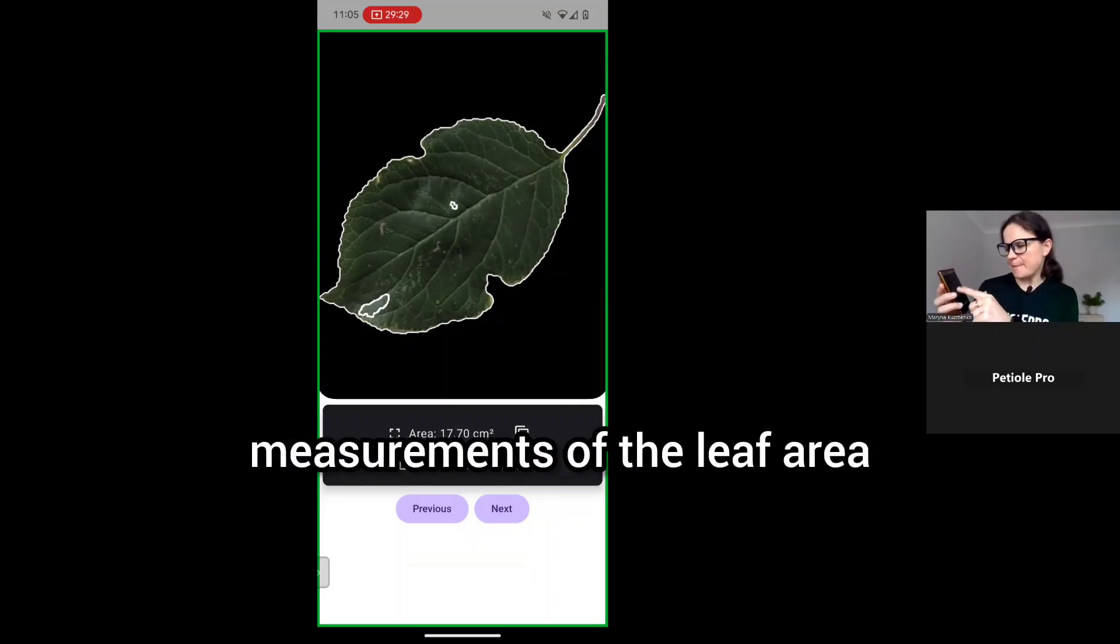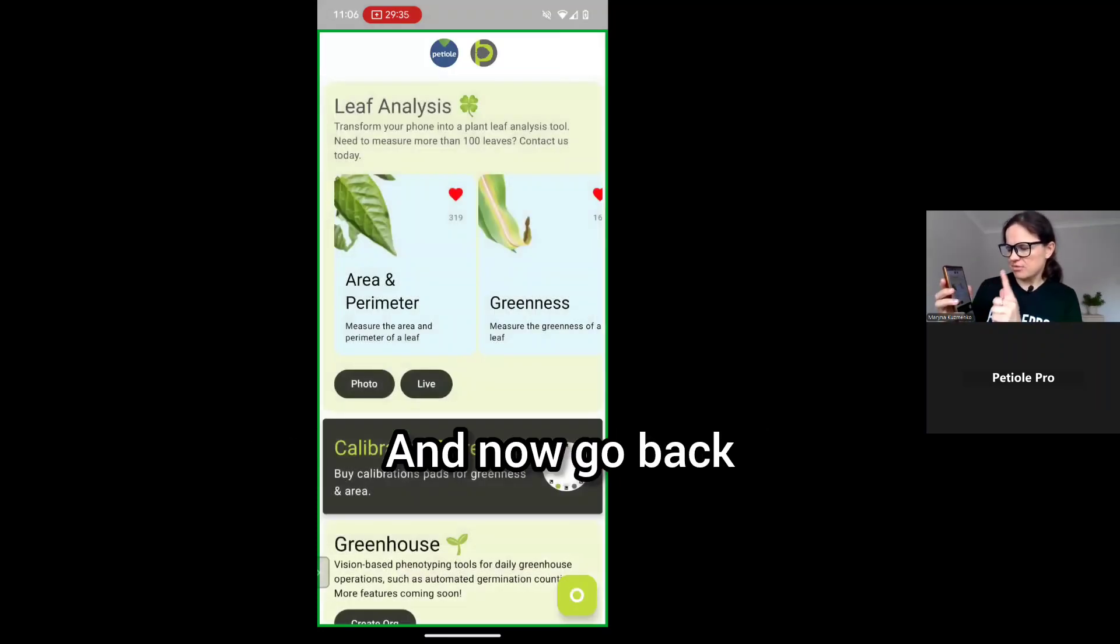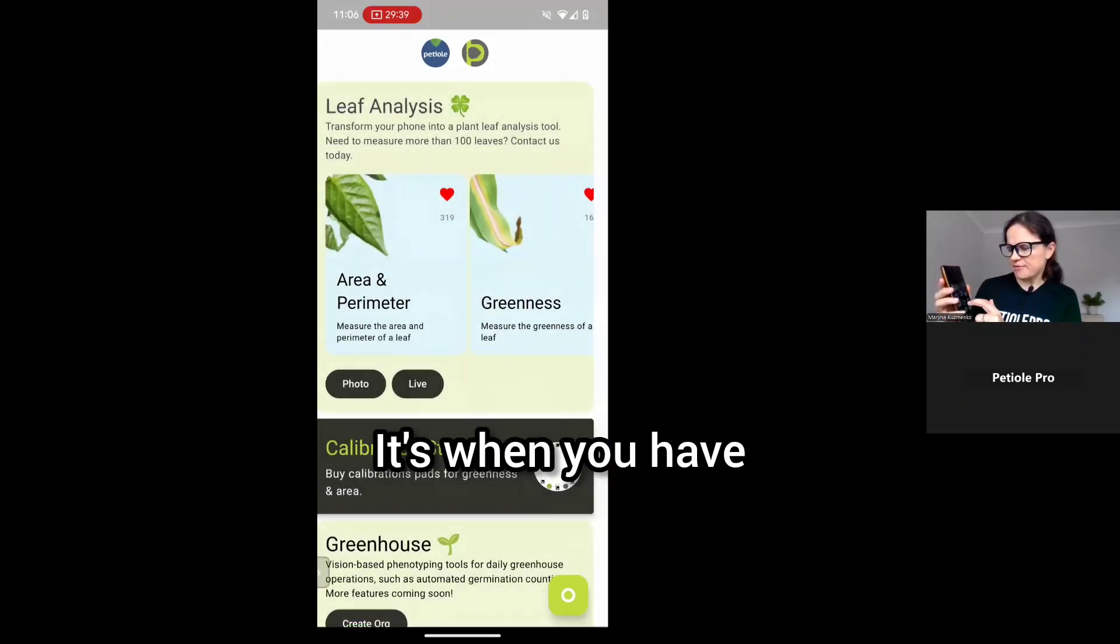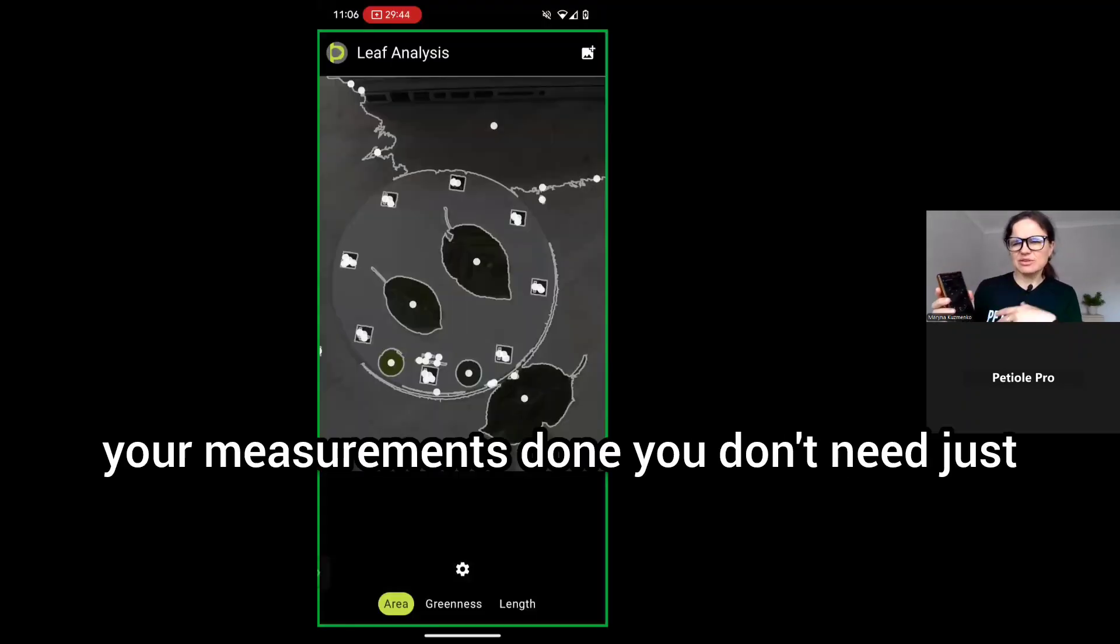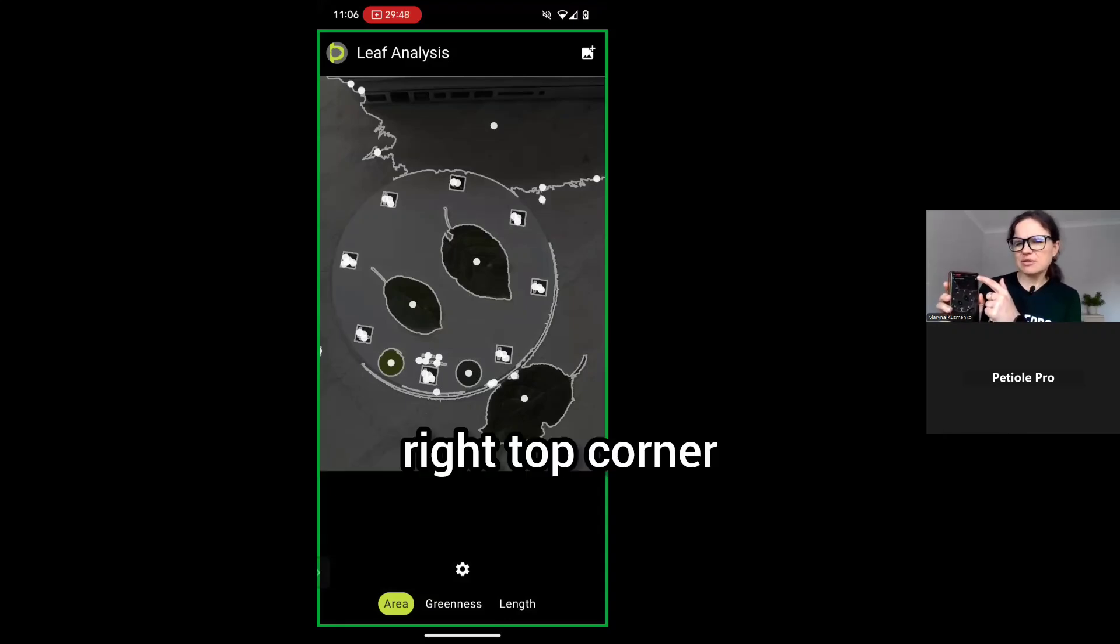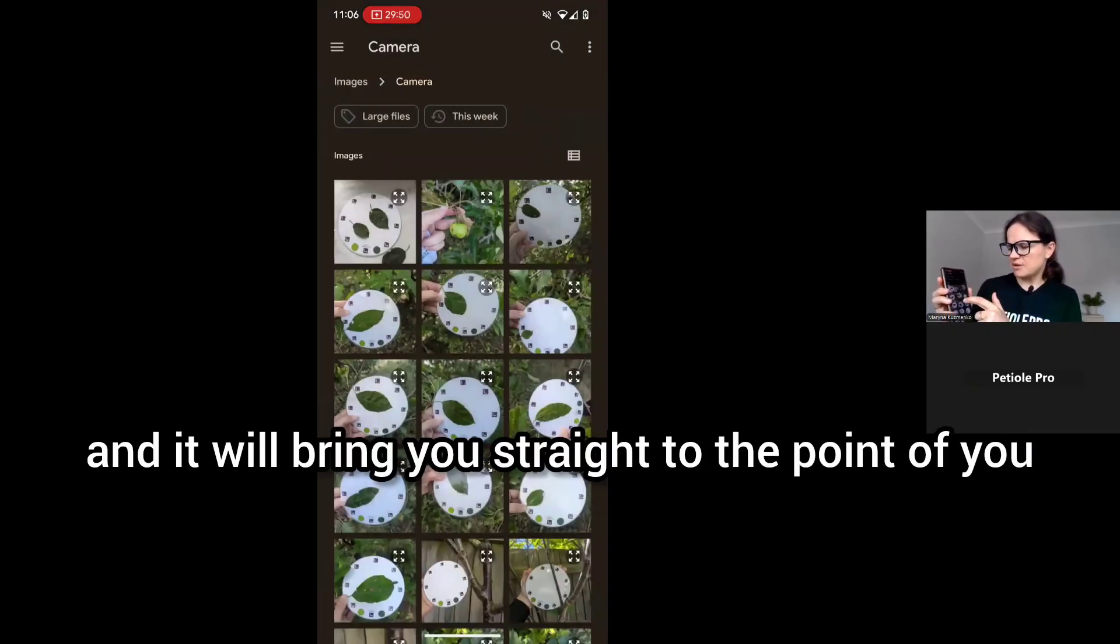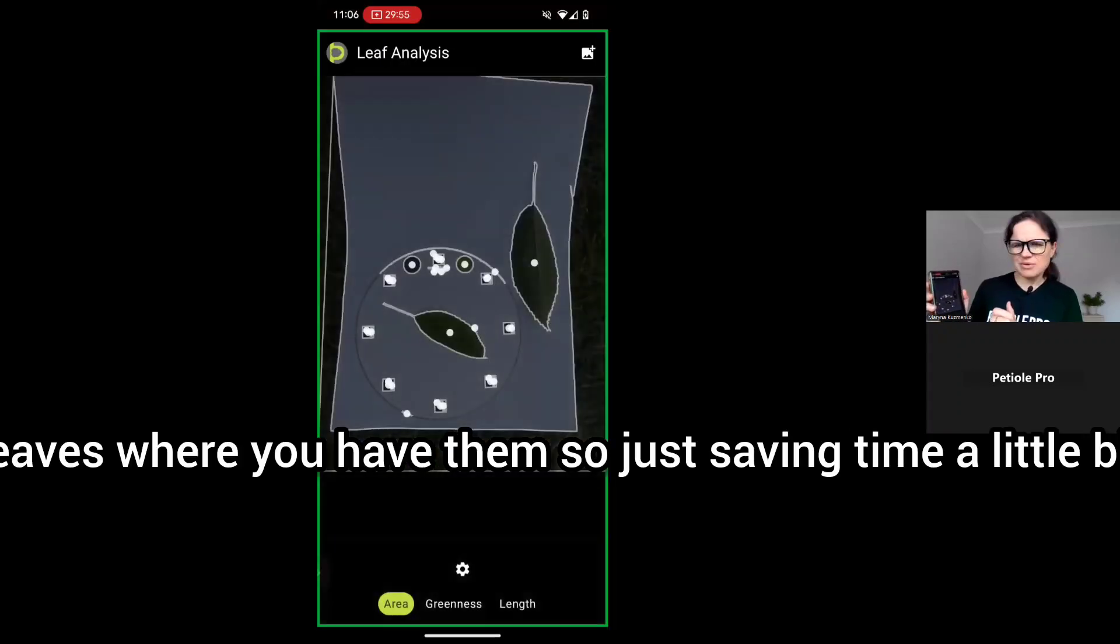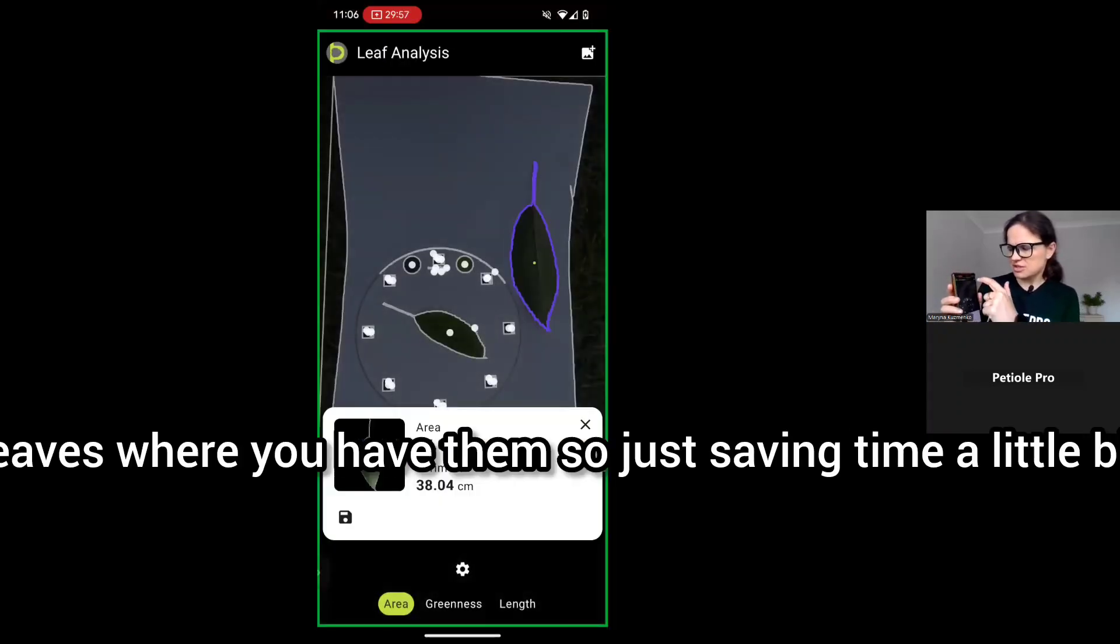Now go back. One more thing which is quite helpful: when you have your measurements done, you don't need to go back all the time. You can press on the right top corner and it will bring you straight to the point of your leaves where you have them. Just saving time a little bit.